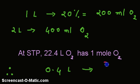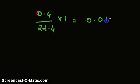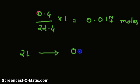So rearranging, 0.4 divided by 22.4 times 1 equals 0.017 moles. So the answer is 2 liters of air will contain 0.017 moles of oxygen. Thank you.